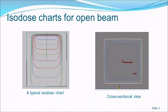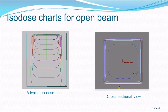Here is a typical isodose chart for a 10×10 beam. The central axis is shown, and dose at off-axis positions is represented by these lines. In cross-section, you get a dose distribution showing lines from 90% down to 10%, with the 100% level near the surface.